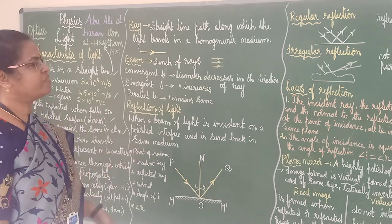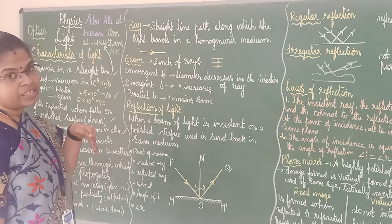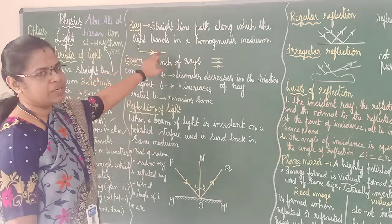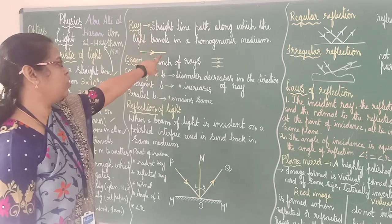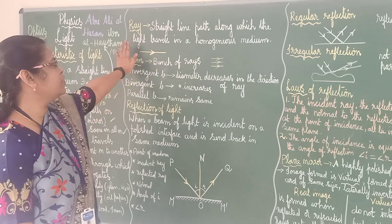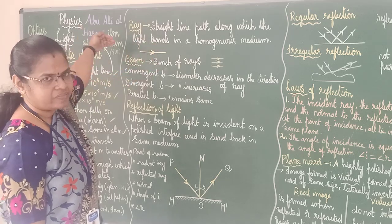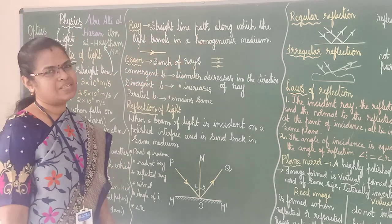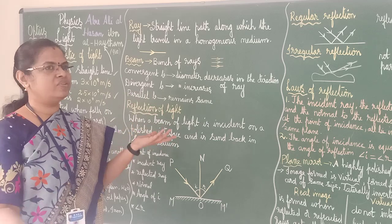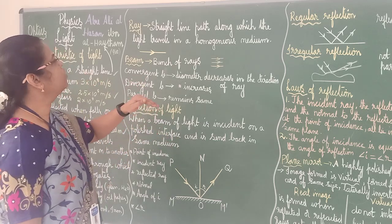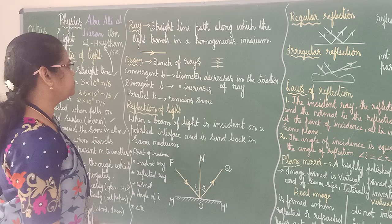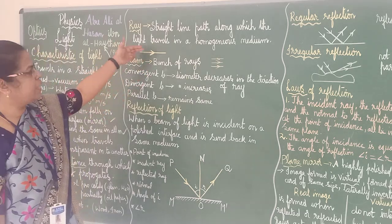What is a ray? A straight line path along which light travels in a homogeneous medium is called a ray. It is usually represented by a line with an arrow in the middle. This is called a ray.